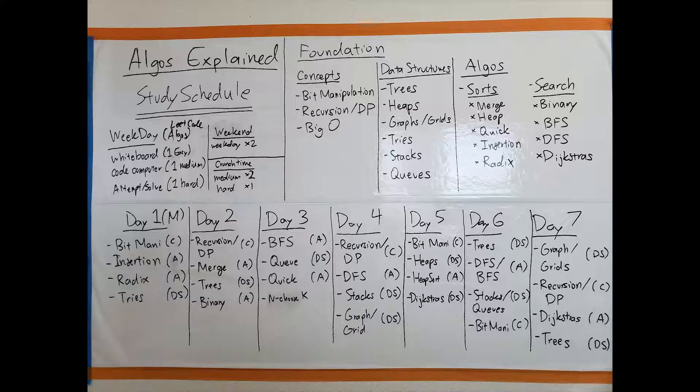The secret to this is not cramming it, but hoping that you have enough time to make it a repetitive process where recursion, oh yeah, I know that because I've been doing it for a whole month. In concepts, recursion and big O are the most important. The only reason why I have bit manipulation on there is because one of my friends said that on his Google onsite, that concept came up.